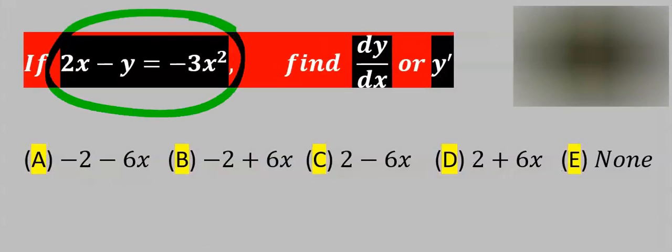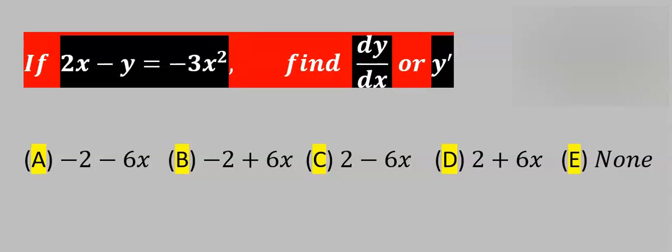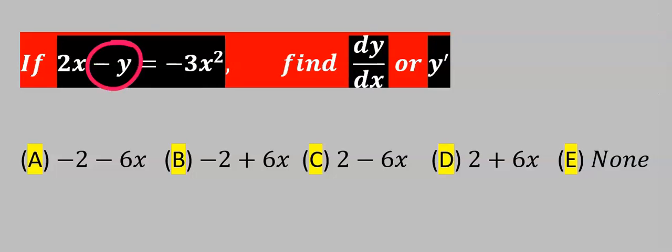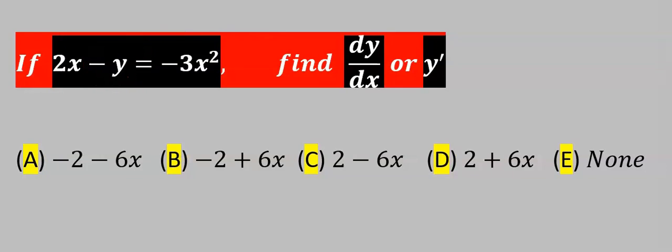Let's consider this question. To solve this problem, the first step here is to make y the subject. This minus y will move over to the other side and become plus y, while minus 3x squared will move over to the other side and become plus 3x squared. Next, we can rearrange this.